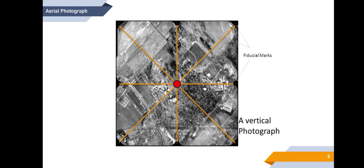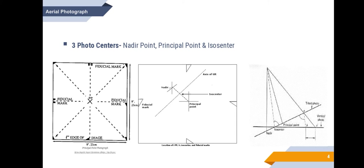The principal point is the intersection between the projection of the optical axis and the ground. The nadir point, which is also called the vertical point or plumb point, is the point vertically beneath the camera center at the time of exposure, where a plumb line extended from the camera lens to the ground intersects the photo image. In the case of a vertical aerial photograph, the nadir point and the principal point are the same. But in the case of a tilted aerial photograph, both these points are different. The isocenter is the point on the photo that falls on a line approximately halfway between the principal point and the nadir point.